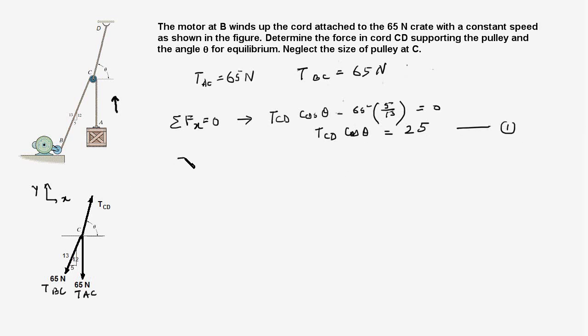Similarly, the sum of all forces in the Y direction equals zero. Sigma Fy equals zero. This is another condition of equilibrium, which gives us TCD sin theta, the Y component of this tension force, minus the Y component of this force and the tension TAC. This will be 65 times—this is 12 and the hypotenuse is 13.